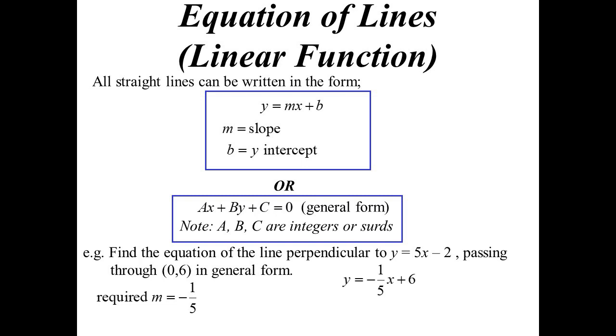But they said in general form. General form, get rid of the fraction. Multiply everything by 5. Now we want to move everything to one side. It is convention to make the x positive. It doesn't have to be, but it's just generally how we do it. So x plus 5y minus 30 is equal to 0.